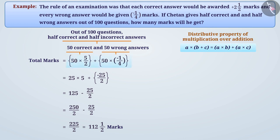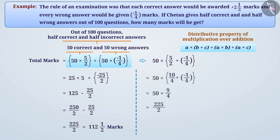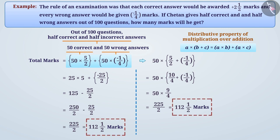Therefore, we can also write fifty multiplied by five by two plus fifty multiplied by minus one by four as fifty multiplied by five by two plus minus one by four. Simplifying it will also result in one hundred twelve and a half marks. Therefore, Chetan will get one hundred twelve and a half marks in the exam. You can see that we get the same result from both methods.